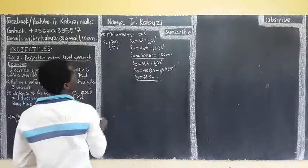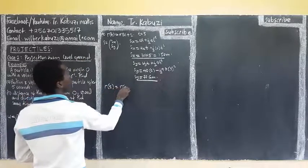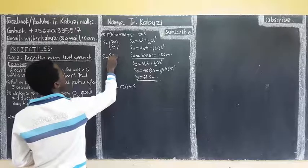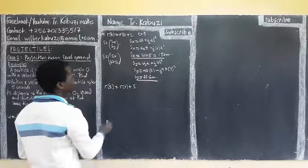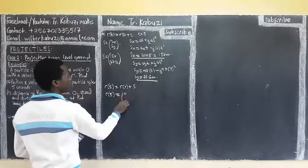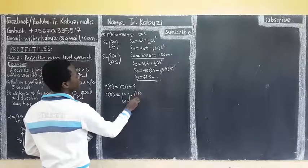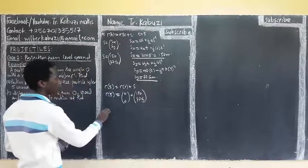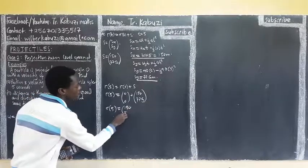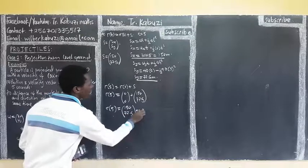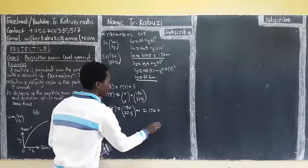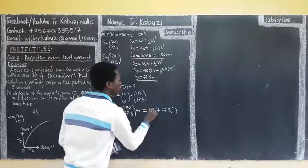So after getting that, I can come and say now my r after 5 seconds is going to be r₀ plus s. Remember the position where the particle was — it was at the origin, so (0, 0) — then plus my s which is (150, 77.5). So my r after 5 seconds, the position of that particle, is going to be 150i plus 77.5j meters.